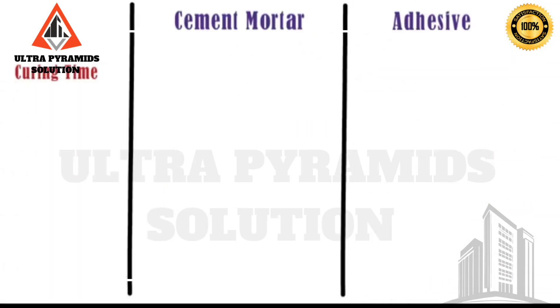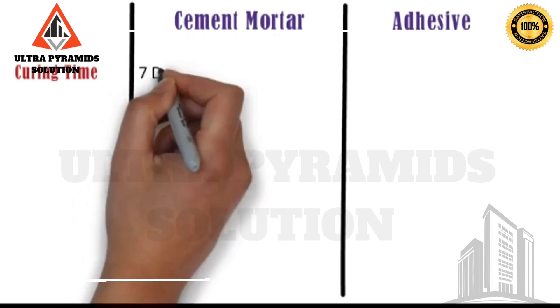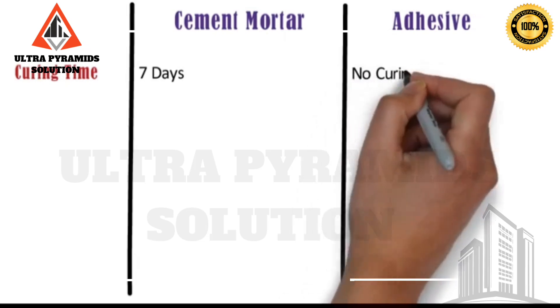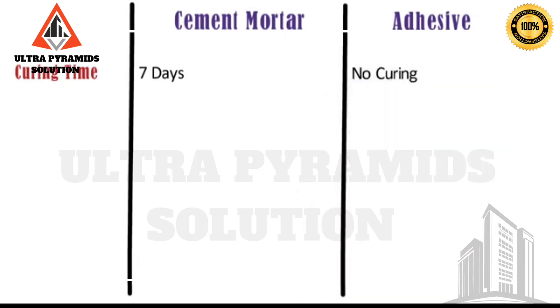Curing time: In case of cement sand mortar, curing is done for 7 days. Whereas, in case of AAC block adhesives, no curing is to be done. Hence, the masonry wall is ready in just 24 hours.